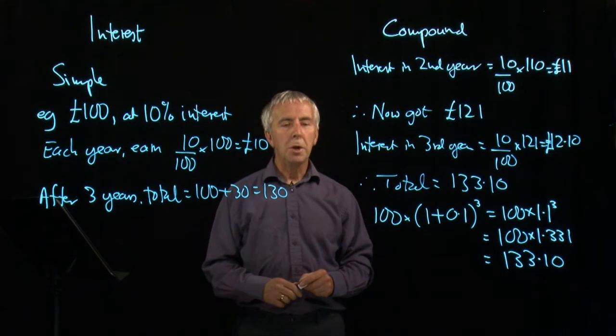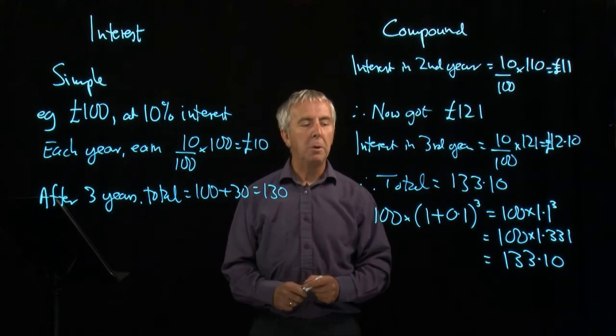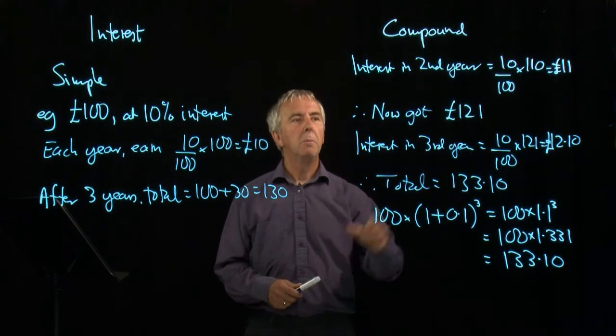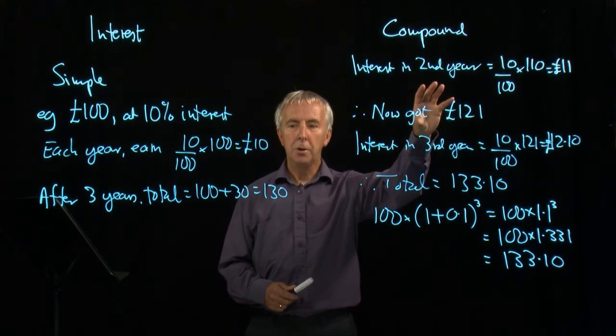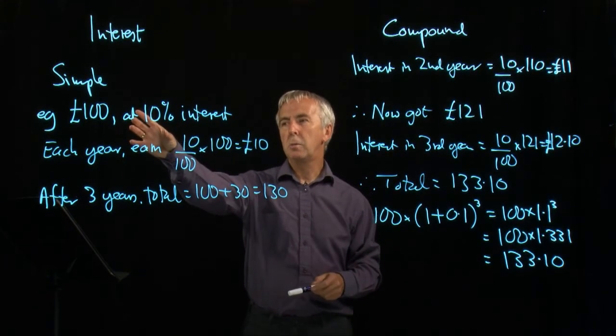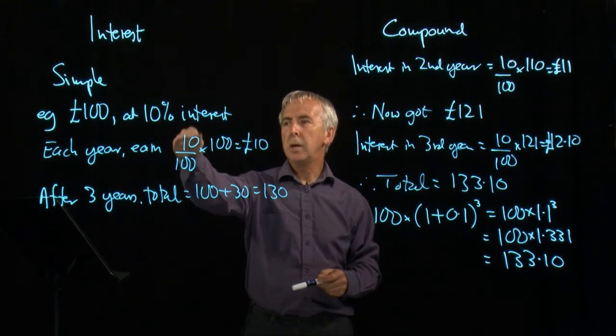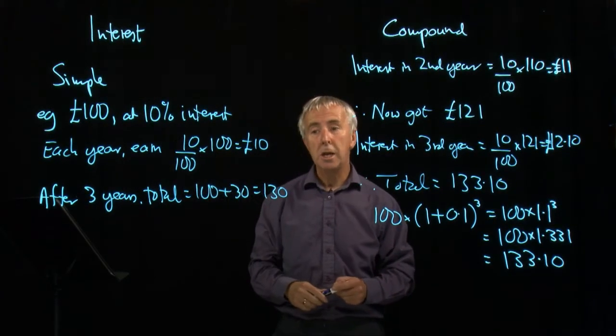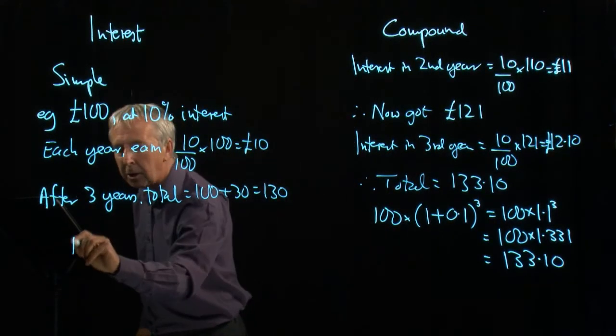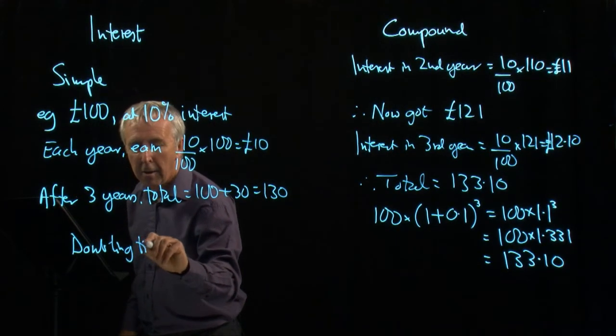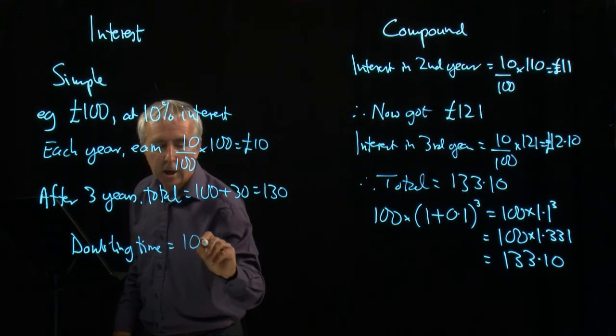It's worth having a rough rule of thumb in mind, which is often used in calculations. How long does it take money to double under compound interest? Here it was easy to work out: 10%, 10 pounds each year, so to get up to 200 pounds would have taken 10 years. So the doubling time here is 10 years.